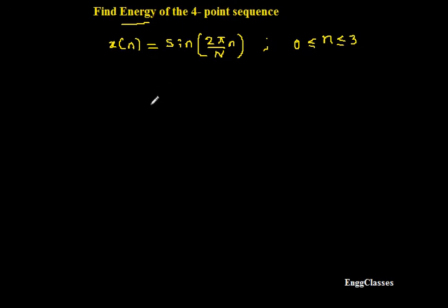The task is to find the energy. Before finding energy, I need to find four samples for x(n). Because x(n) is given as sin(2πn/N), if I consider this I cannot solve the numerical. So first in this expression I'll put capital N equal to 4.